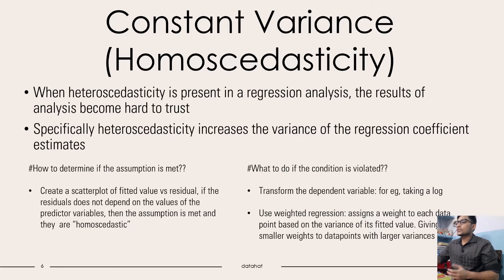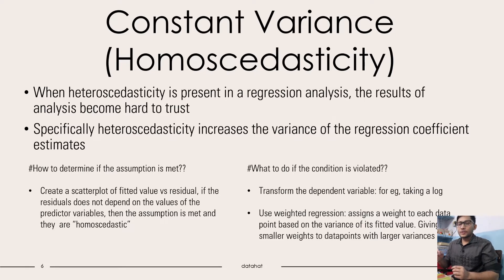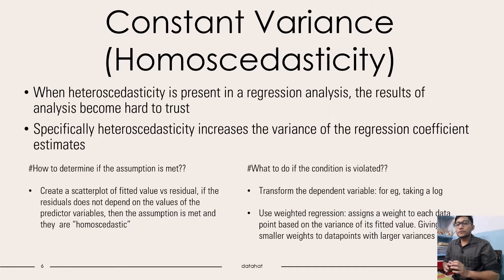How do we determine if this assumption is met? We plot a scatter plot with the fitted value or regression output and the residuals. If the residual doesn't depend on the values of the predictor variable, then the assumption is met and the data are homoscedastic. What to do if the condition is violated? We apply a non-linear transformation — for example, log — here transforming the dependent variable. Or we could use weighted regression, which assigns a weight to each point based on the variance of its fitted value, giving smaller weights to data points with larger variances.